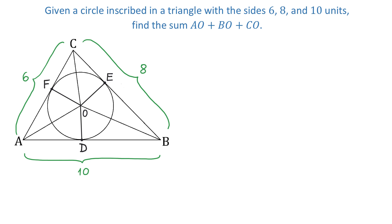We can say that DO is equal to EO, and it's equal to FO, because each of these line segments represents the radius of the circle, and we can call this radius R. The radius of a circle is always perpendicular to the tangent line at the point of tangency. So these two angles are right angles, and these two are also right angles, as well as these two.